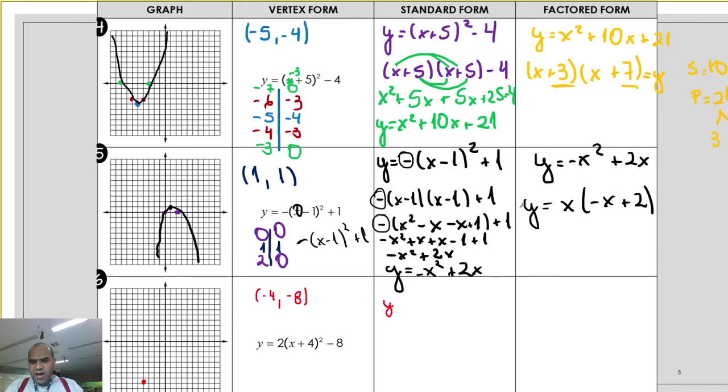So, for y, y equals 2 times x plus 4, x plus 4, square minus 8. x plus 4, square, guys, it is x plus 4 times x plus 4, which is the result. 2 times x square, x square, plus 8x, 8x, will be 4x and 4x, that's why I'm doing the same thing. 4 times 4, 16.